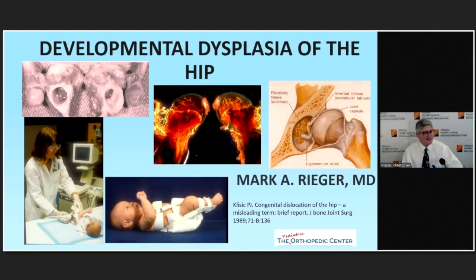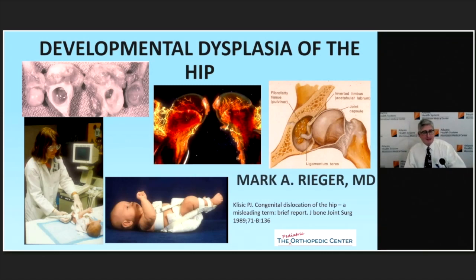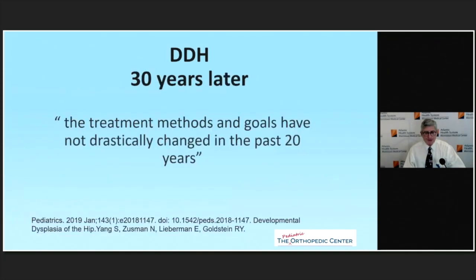Thank you for joining us tonight. I want to thank Ellen Dean for inviting me to speak along with Dr. Wittig tonight. My charge was to talk about developmental dysplasia of the hip — and I emphasize developmental dysplasia of the hip. You can see the citation here back in 1989, which is a dear number to me because that's when I finished my fellowship. It used to be called congenital dislocation of the hip.